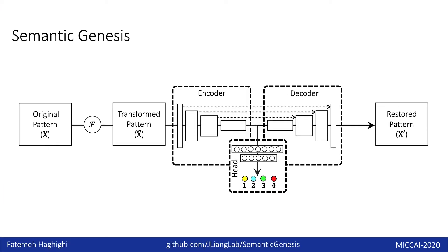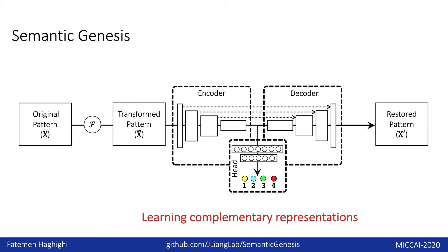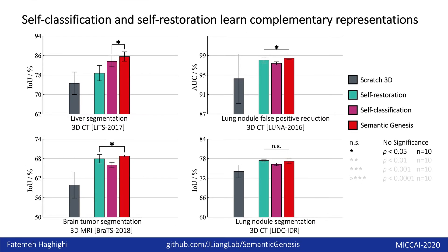In semantic genesis, we combined self-classification and self-restoration together to let the model learn complementary representations. The combination of self-classification and self-restoration consistently shows the best performance across all four 3D target tasks in comparison with training from scratch and each individual component. The stars represent the significance of the results.